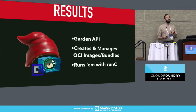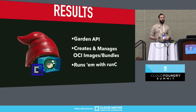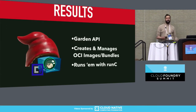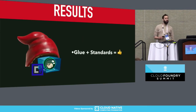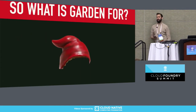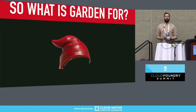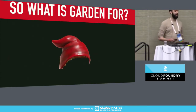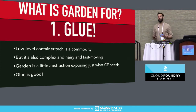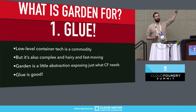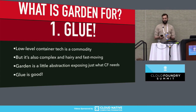What we ended up with was really quite nice. Because we split the Garden implementation, the Garden API stayed the same, and we were able to just manage standard bundles and use the standard tool to run them. So glue and standards is great, but what's Garden for now? If we're just wrapping RunC, what does the Garden team do? We do three things: we're glue — because gluing the rest of the system to the low-level stuff is a thing that someone needs to do, and keeping that abstracted is not a bad idea.